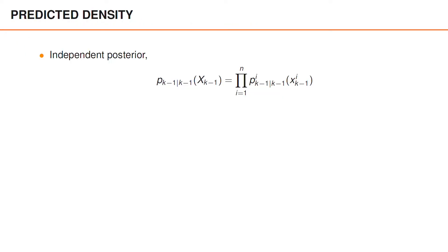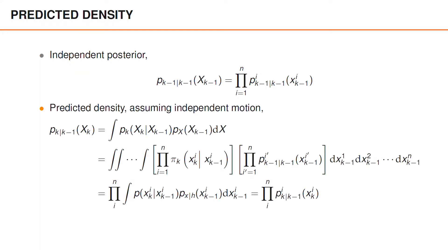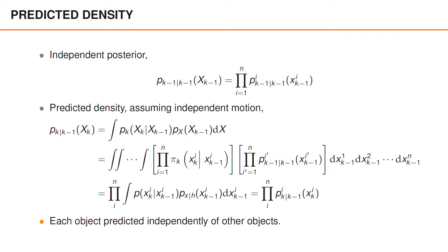Now, consider an independent posterior at time k-1. The predicted density, assuming independent motion, is given by the Chapman-Kolmogorov prediction. If we insert the transition density and the posterior into the integral, we can rewrite this as a product of a Chapman-Kolmogorov prediction for each individual object. In other words, we predict each of the objects independently of the other objects, and the predicted density is an independent density.